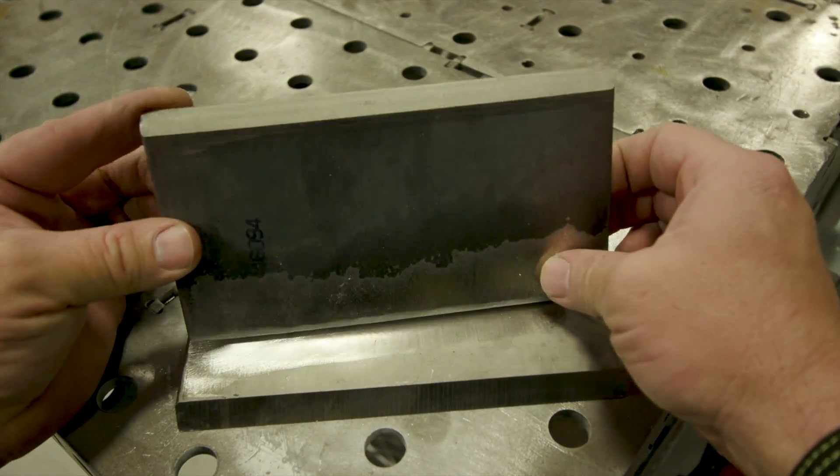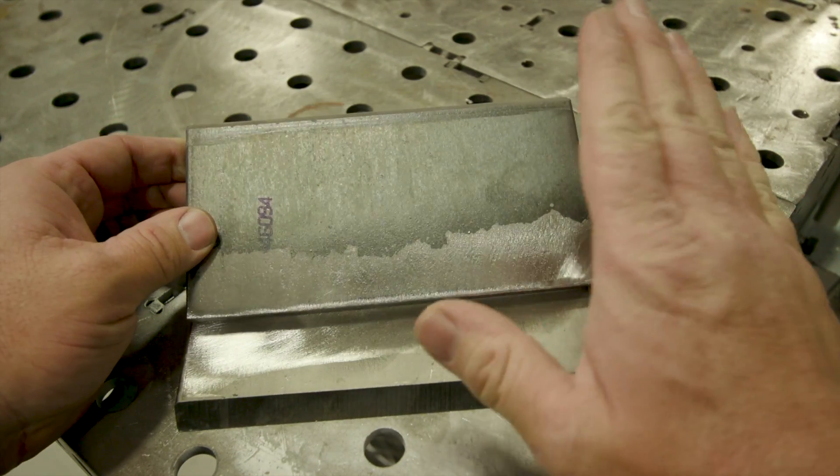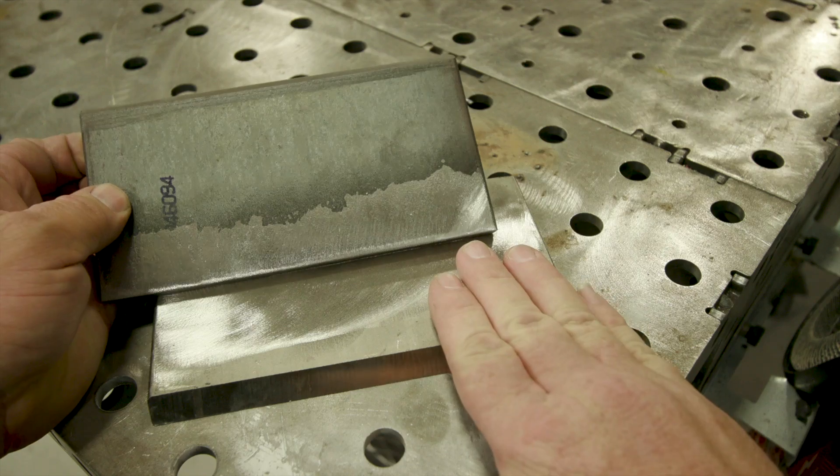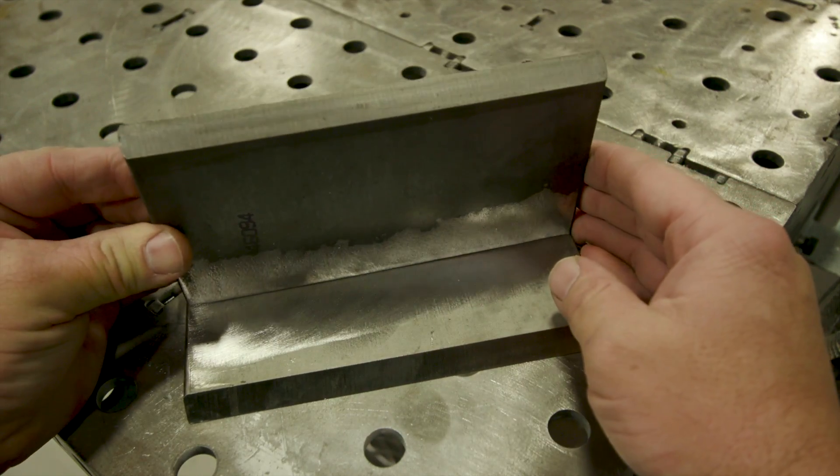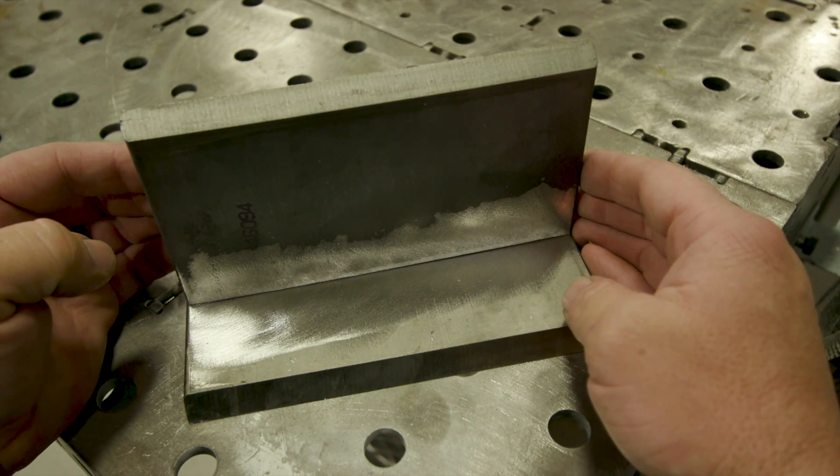Hey guys, welcome back to weld.com. Today we're going to do some stainless to carbon. I have some A36 plate here and some stainless here. We're going to show you how to run this using a 309 electrode in the flat position.